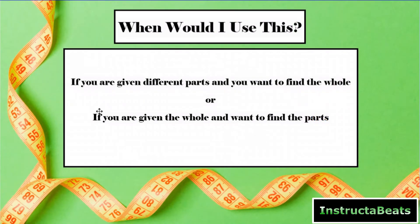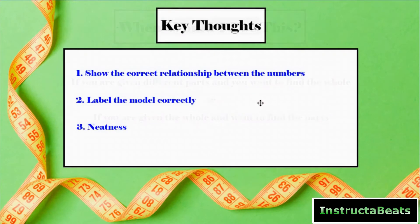But a part-whole model visually shows the relationship of the different parts to the whole. So when would you use this? Today we're going to be focused on when you're given the whole and you want to find the parts. Your key thoughts, same thing as the last lesson. Number one, you want to show the correct relationship between the numbers. Number two, you want to label the model correctly. And then number three, you want to be neat. It has to at least have some level of neatness where you can read it and you can understand what's happening when you do this.